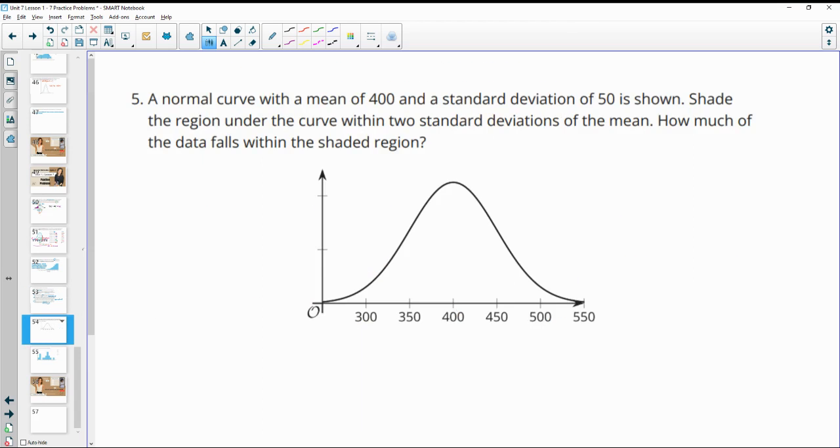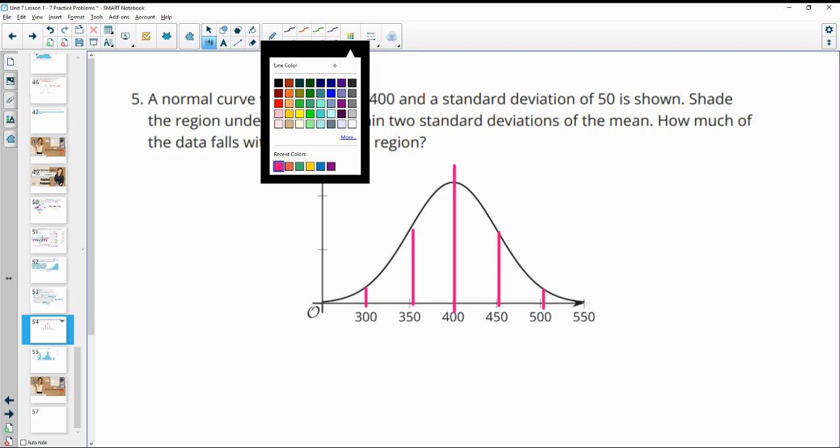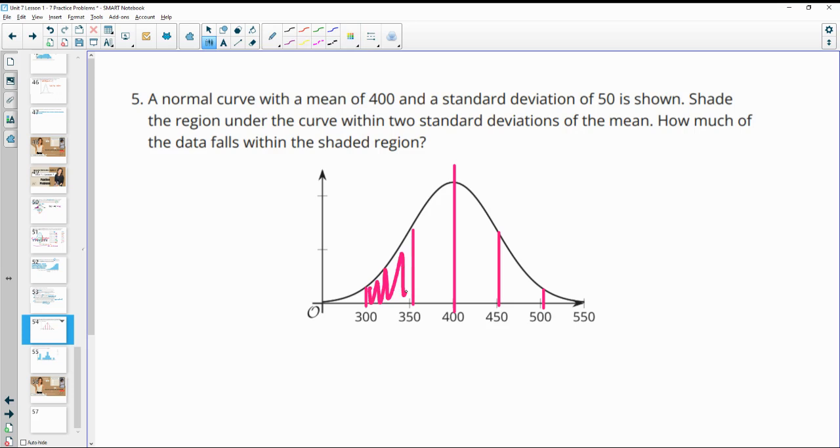Number five: A normal curve with a mean of 400 and a standard deviation is shown. Shade the region under the curve two standard deviations away from the mean. So here's the mean. 50 on either side would be one standard deviation. And then another 50 would be your second standard deviation. So you want to shade in that entire area from 300 to 500.